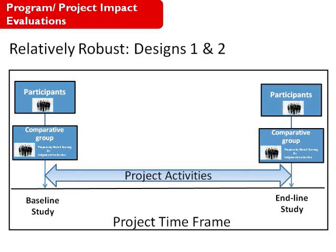Once the activities are completed or near completion, the endline or follow-up study is conducted among both the participants and the control or comparative group. Design 1 and 2 are grouped together because both have baseline and follow-up studies. However, Design 1 uses randomization or propensity score matching to identify the comparative group, while Design 2 identifies a comparative group based on matching characteristics or other criteria. The key point is that both have baseline and follow-up studies not only among participants but also a comparative or control group.